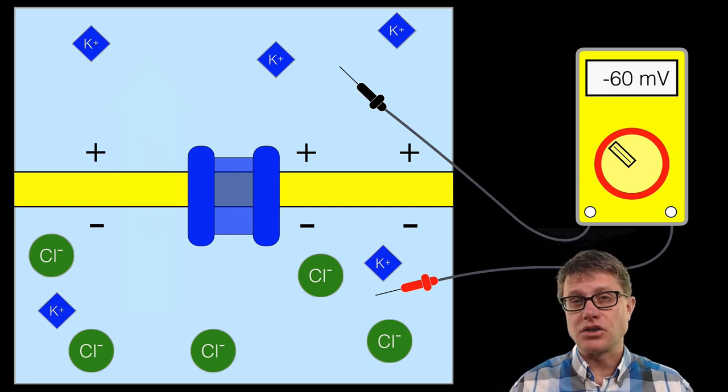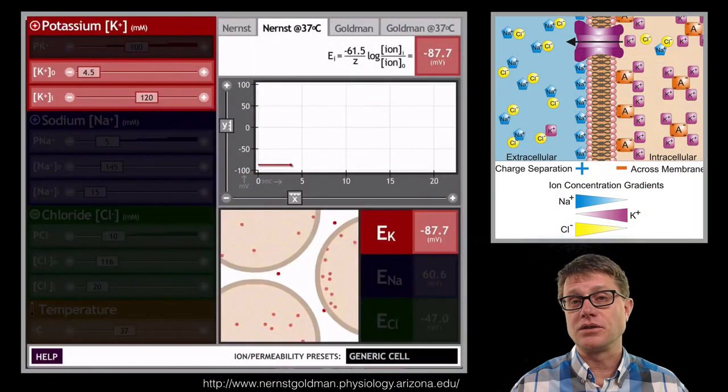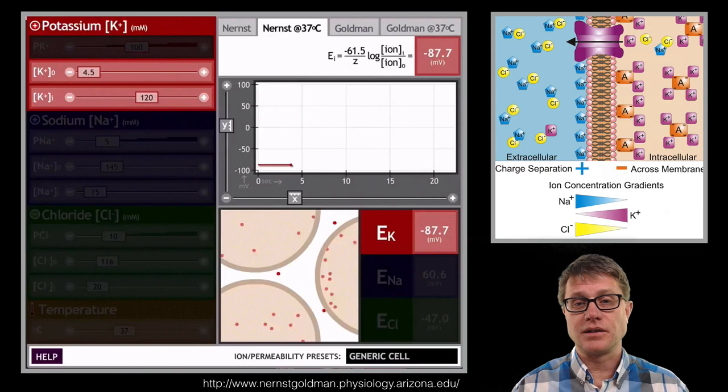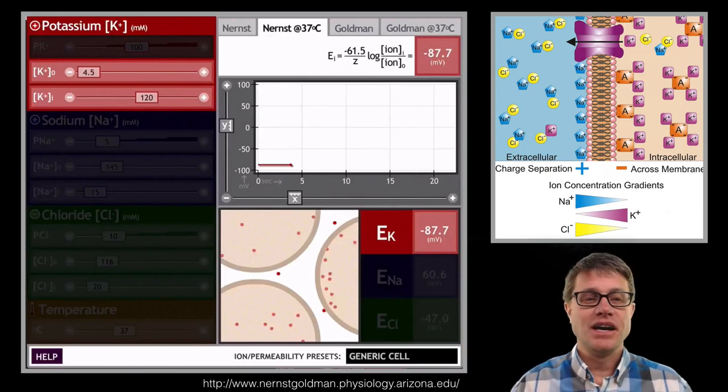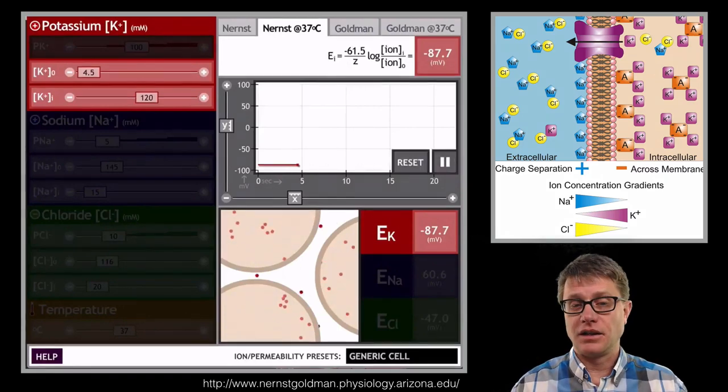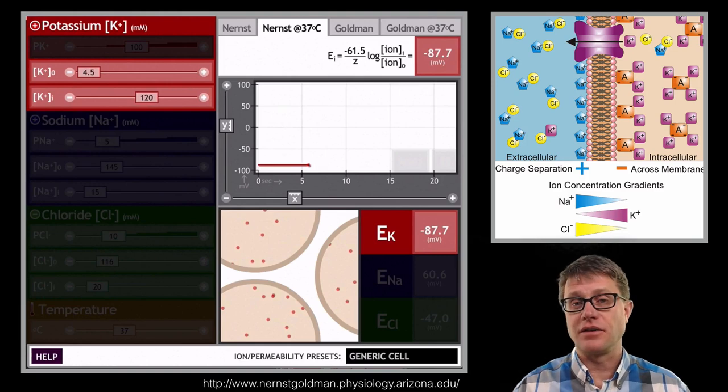Now we can look at the concentration inside and outside and use the Nernst equation to figure out what that voltage is actually going to be. And so the University of Arizona has put together a little simulator. I will put a link to that down below as well. And you could run the typical potassium levels in a generic human cell. And it will show you what is going on. Again, there is going to be more potassium on the inside of the cell than the outside.